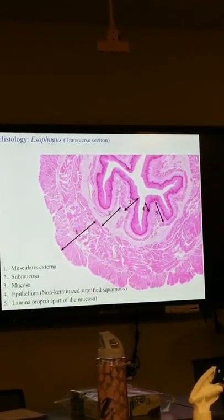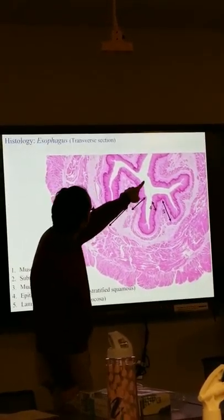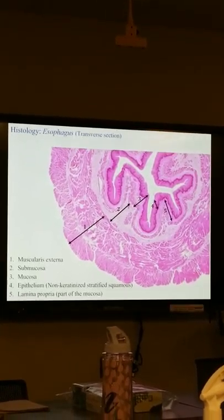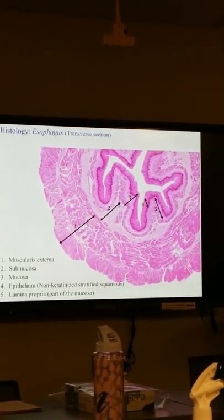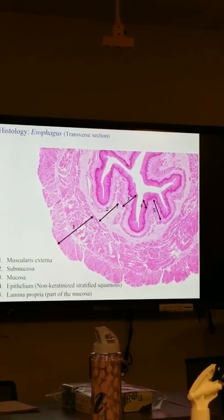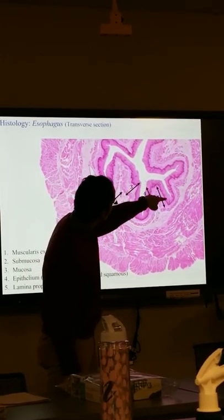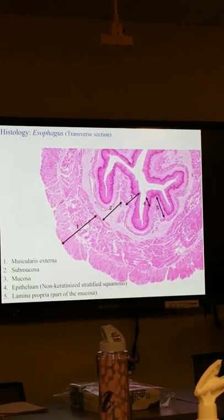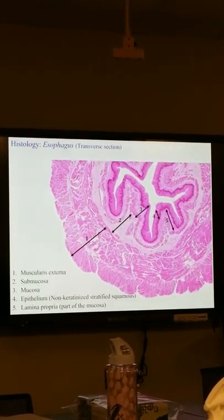This image shows the wall of the esophagus. You can see the lumen — it's an irregularly shaped lumen because it's a collapsible tube. It collapses when not filled, and expands as food moves through it. Muscular contractions propel that food down towards the stomach. The epithelium here is your non-keratinized stratified squamous epithelium — that is the epithelium associated with the digestive mucosa.